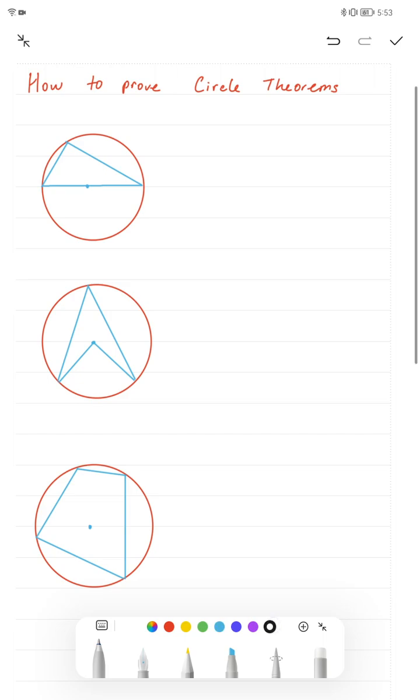Firstly, we're going to look at if you have a triangle where one of the lengths is the diameter of the circle, it shows us that this angle here must always be 90 degrees. So let's prove that. If we're to draw a line from the point of that angle straight to the centre, this becomes a radius, this is a radius, and this is a radius.